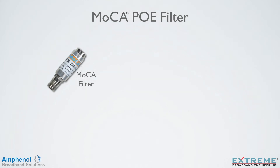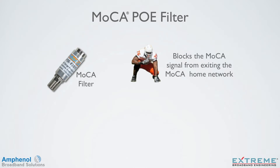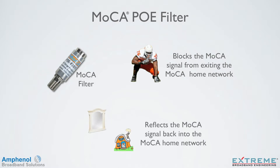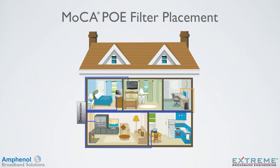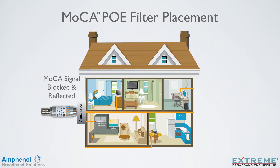The MoCA Point of Entry Filter performs two functions. It blocks the MoCA signal from exiting the MoCA home network with high attenuation at the MoCA frequencies, and reflects the MoCA signal back into the MoCA network for improved performance. Within the home MoCA network, the MoCA signal is transmitted and received between any two MoCA-enabled devices. This same MoCA signal can escape the network and travel up the drop, causing interference to other MoCA customers, or other MoCA customer signals could travel down the drop and interfere with the MoCA network. By placing a MoCA Point of Entry filter at the demarcation point, the filter will block the signal from exiting the network and reflect it back into the home MoCA network for additional signal performance.